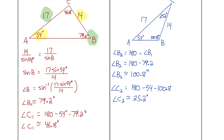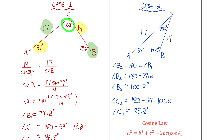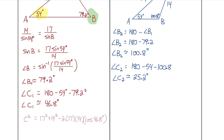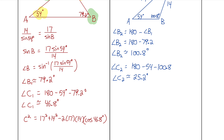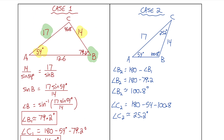The last thing to solve in both triangles is the length of side C. I'll use cosine law, which works when you know two sides and the contained angle. Cosine law: C squared equals the sum of the squares of the other two sides minus two times their product times cosine of the contained angle. Filling in the formula for case one with the contained angle of 46.8 degrees, then square-rooting gives an approximate value of 12.6 centimeters. Triangle one is now fully solved.